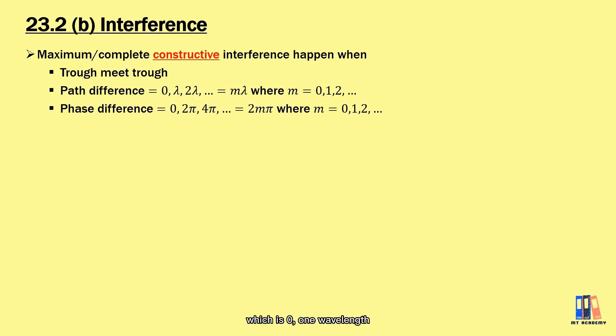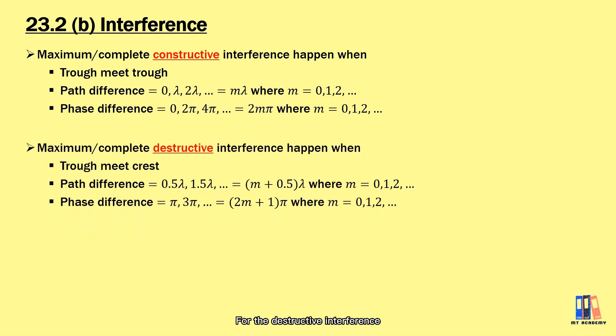In short, the path difference which is zero or one wavelength, two wavelength, etc., which is also equivalent to zero, 2π radian, 4π radian and so on, they produce maximum constructive interference. By maximum constructive, we mean both crests of the waves are aligned to produce maximum amplitude. For destructive interference, the condition is when the path difference is 0.5λ, 1.5λ, etc., or in terms of phase difference, 1π, 3π, etc. The formulas are listed here for your reference. There could be different expressions in the book; just stick with one and make sure they follow the correct sequence.